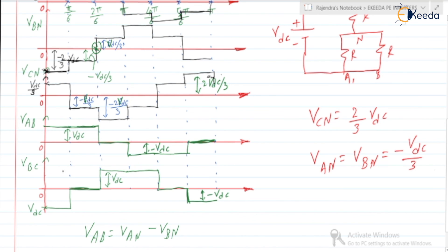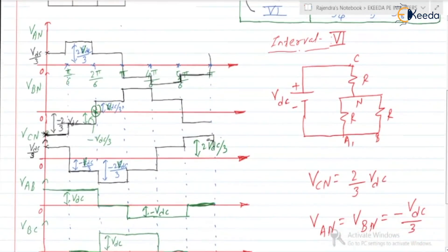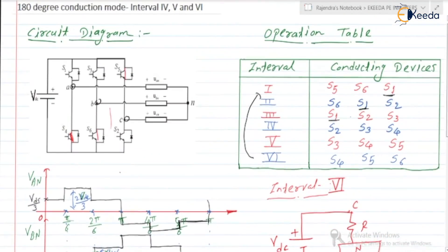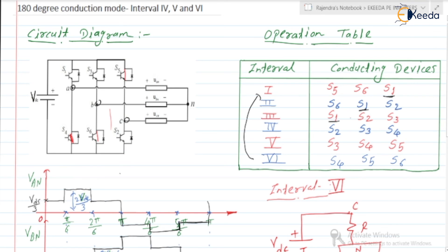Similarly, you can check for the line voltages as well. The waveform of VAB repeats for VBC after 2 intervals, so VBC is lagging VAB by 120 degrees. There exists a phase displacement of 120 degrees between the line voltages. This is about the waveforms and circuit operation for the six intervals of 180-degree conduction mode. In the next video, we are going to derive the expressions of line and phase voltages. Thank you.